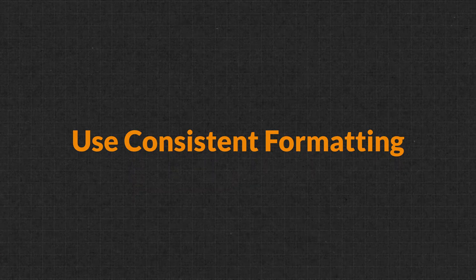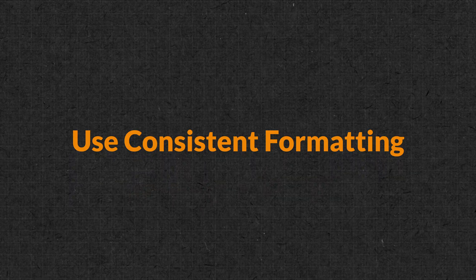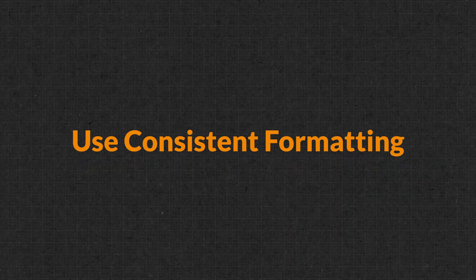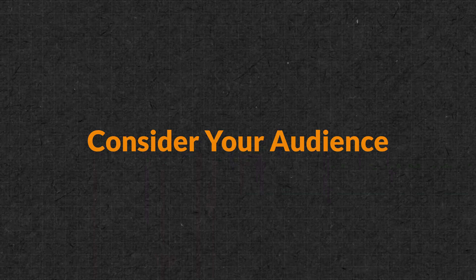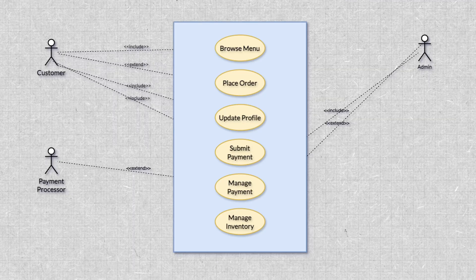Use consistent shapes, fonts, and lines throughout your diagram — this improves readability and makes it easier for everyone to understand. The second best practice is to match the level of detail to your needs. For initial discussions, you can start with a basic diagram, and as the project progresses, add more details as needed. This ties to the next point: consider the audience. Tailor the level of detail to the complexity of your audience's understanding — a technical team might need a more in-depth view than stakeholders unfamiliar with your system.